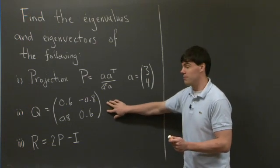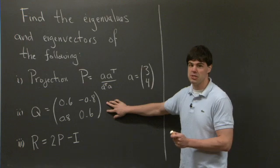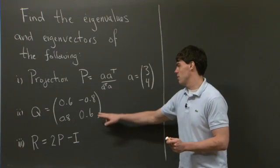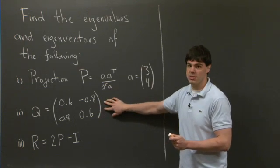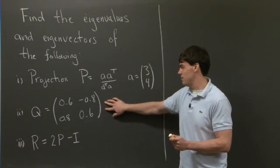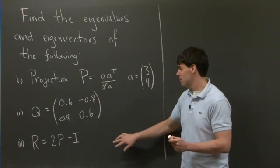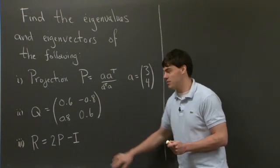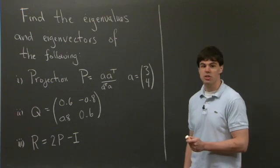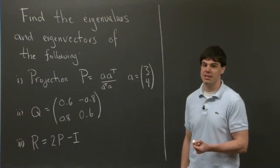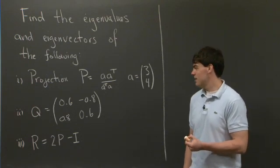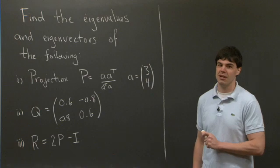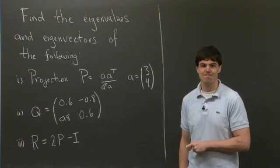The second problem is for a rotation matrix Q, which is [0.6, -0.8; 0.8, 0.6]. And the third one is for a reflection matrix, which is 2P minus the identity. I'll let you work these out, and then I'll come back and fill in my solutions.